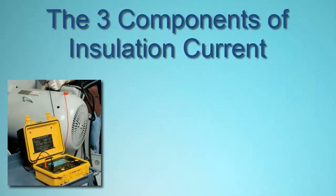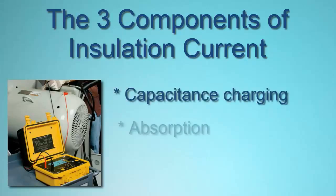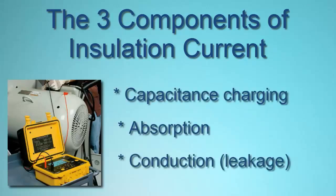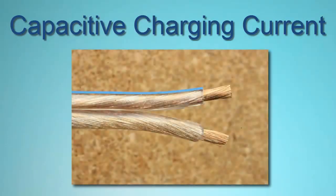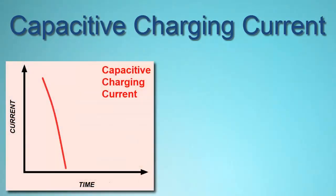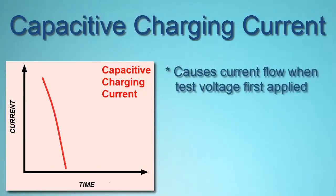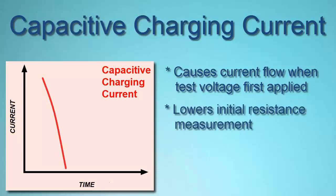To properly interpret test results, it's important to understand that the total current flowing through the insulation consists of three components: capacitive charging current, absorption current, and conduction or leakage current. When two conductors are in close proximity separated by an insulator, they can act as a capacitor. When test voltage is first applied, this capacitive charging effect results in current briefly flowing through the conductors until the voltage across the insulation reaches the test voltage. Consequently, the initial resistance measurement would be relatively low and then quickly rise as the capacitance becomes fully charged.